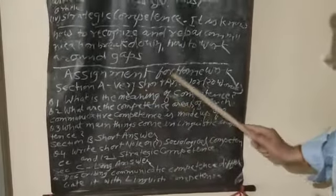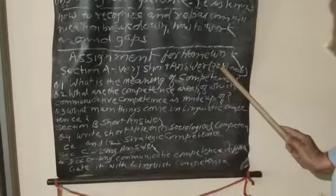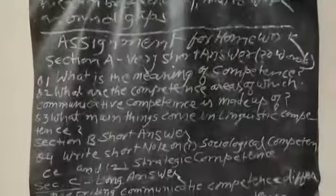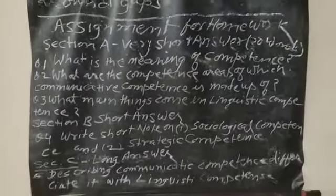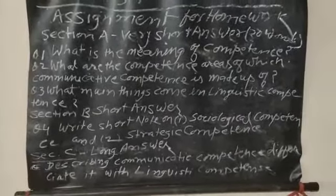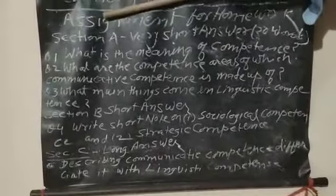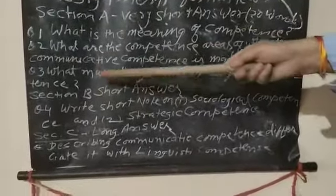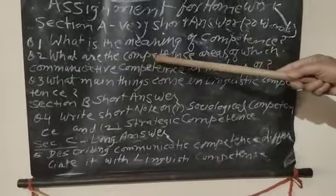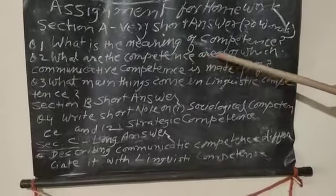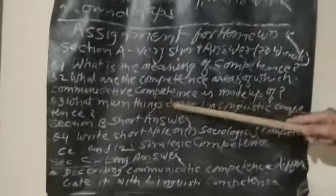Now, there are some assignment homework for you. Section A, very short answer question, 20 words or below. What is the meaning of competence? Very beginning I have defined this word. What are the competence areas of which communicative competence is made up of? Four areas.